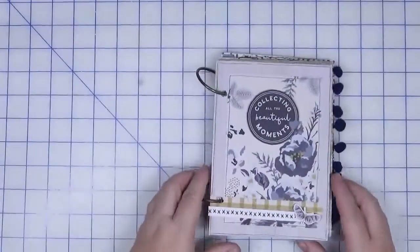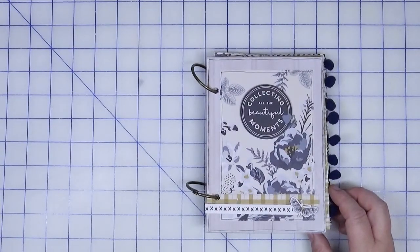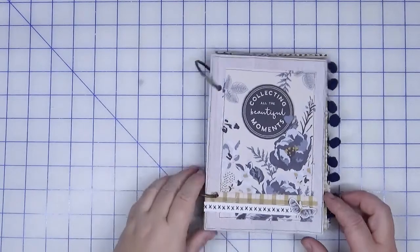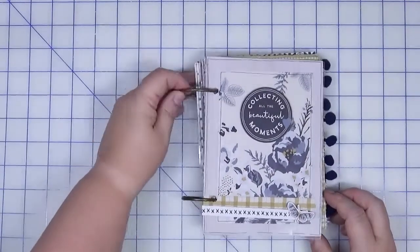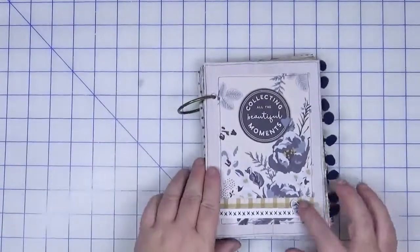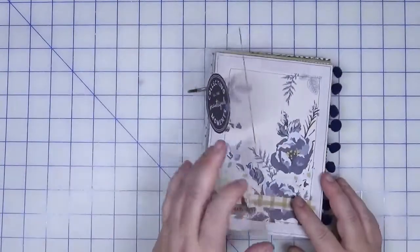This collection of paper that she used is by My Mind's Eye. It is Gingham Foundry. It is gorgeous and I actually had just recently purchased this. They had a sale, so I've got more of this in my stash to play with.